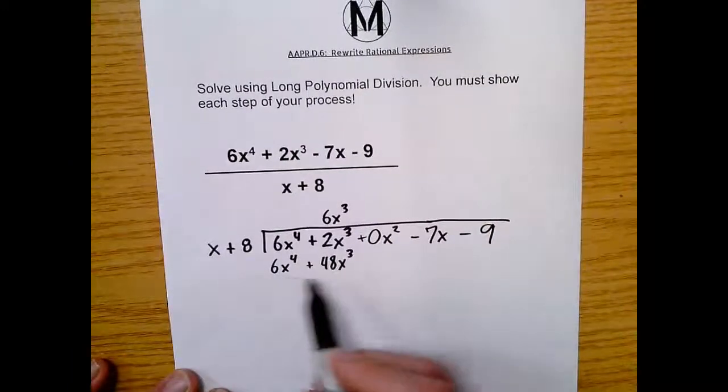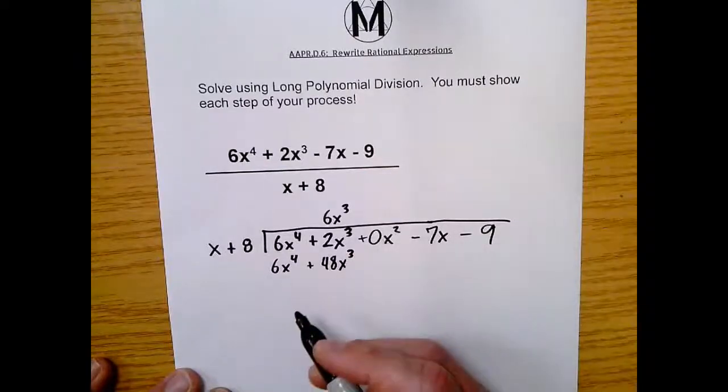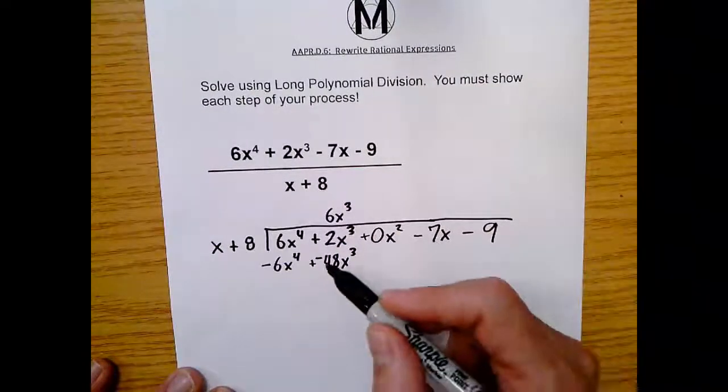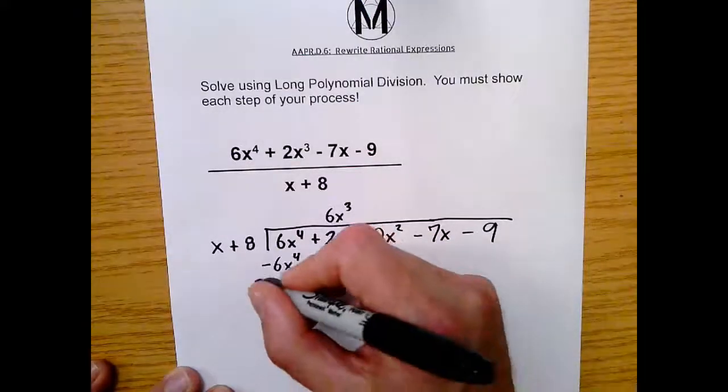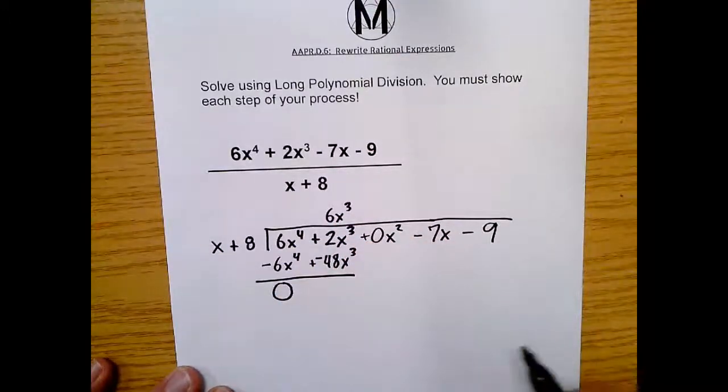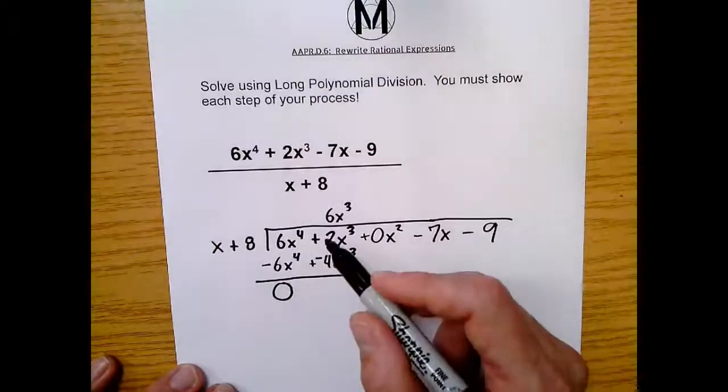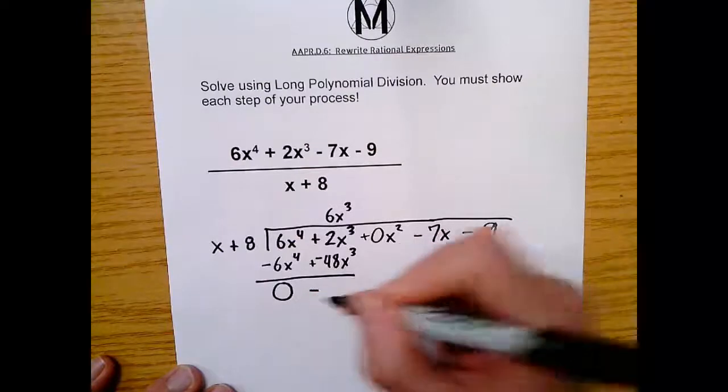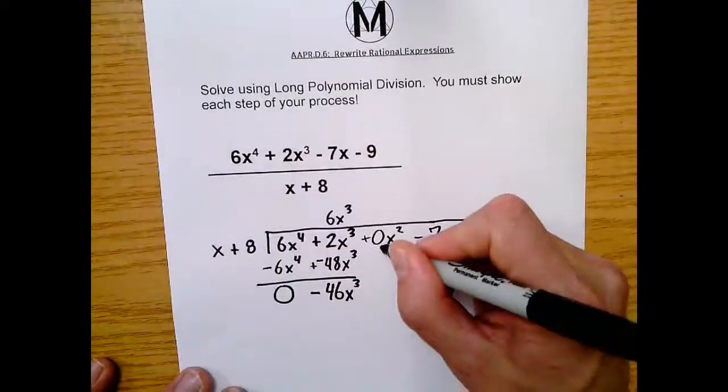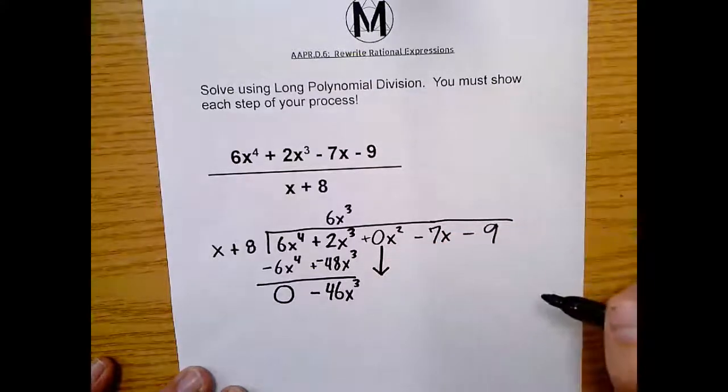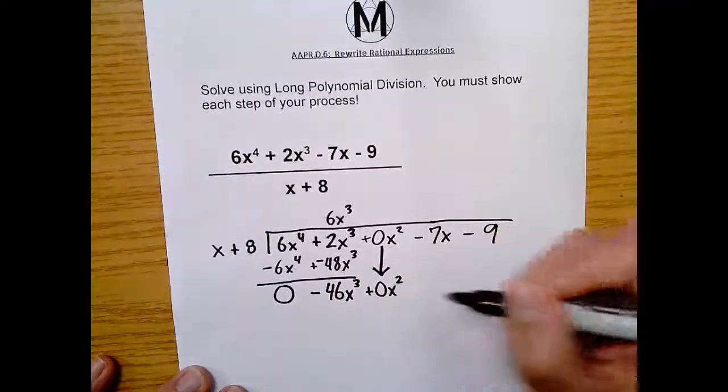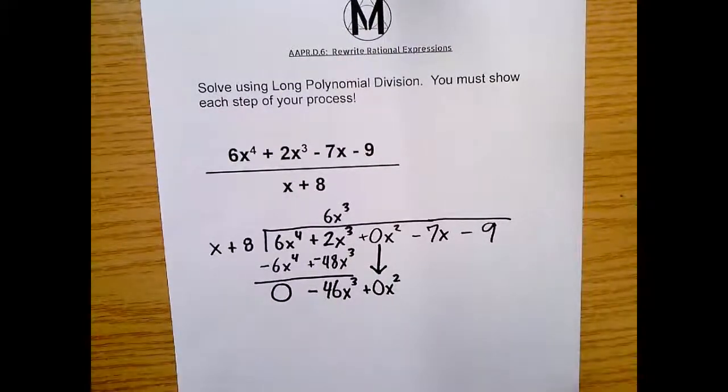The next step is to subtract. So we've got to change the signs or distribute a negative 1 to this binomial so we can subtract. This becomes a minus, and this plus becomes a minus. Remember, subtracting is just like adding a negative. So now we're just like adding negative 48x to the third. This becomes 0. 6x to the fourth minus 6x to the fourth is 0. That's a good sign when we do this process. And then we say 2 minus 48. We're actually going to get a negative 46x to the third. That was step three. Step four, the last step of this dance, is to bring it down. So we're just going to bring down this 0x squared.